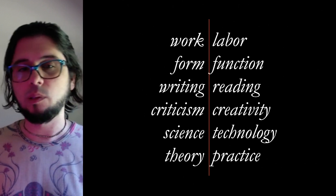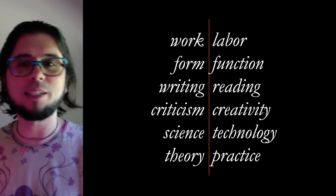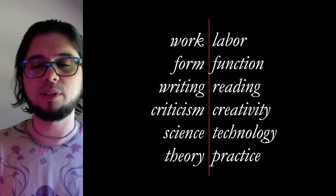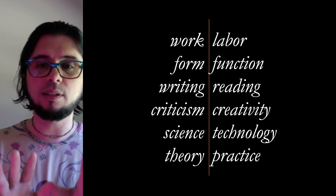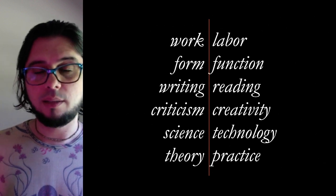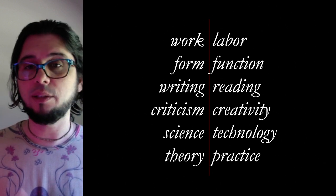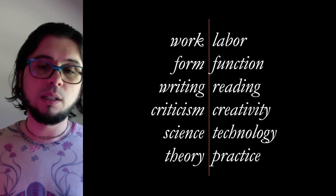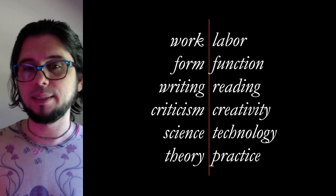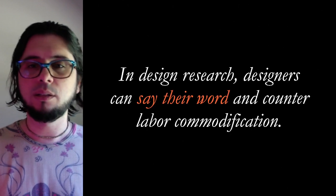People concerned with work, form, writing, criticism, science, or theory are well regarded in society. But people concerned with labor, function, reading, creativity, technology, and practice are considered to be on the less privileged side. This dichotomy between social groups is used to justify exploitation — the idea that people on the right side of this dichotomy are doing less valuable work and therefore deserve less compensation or recognition.